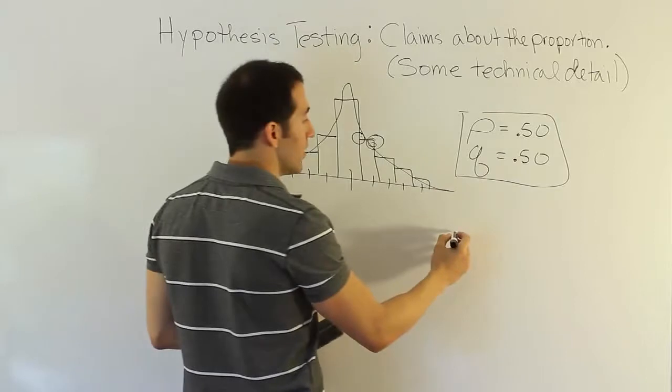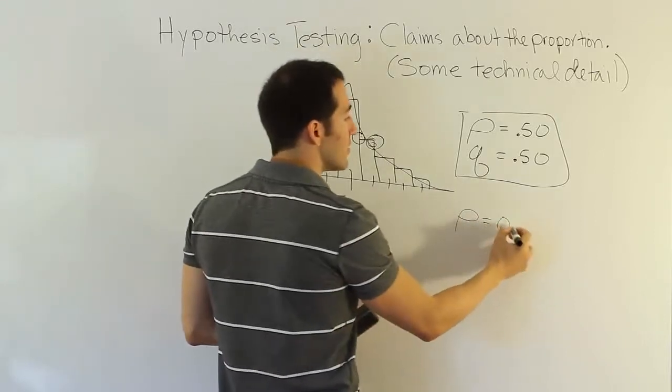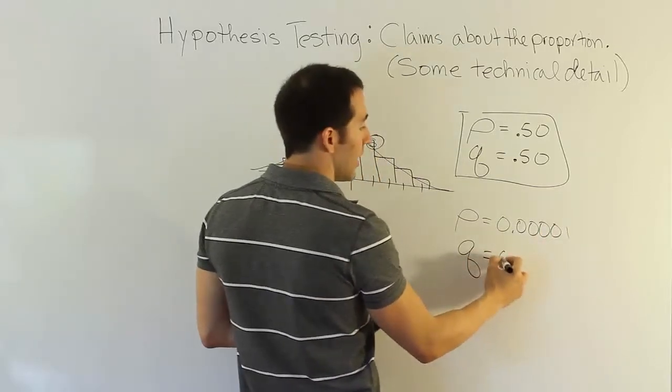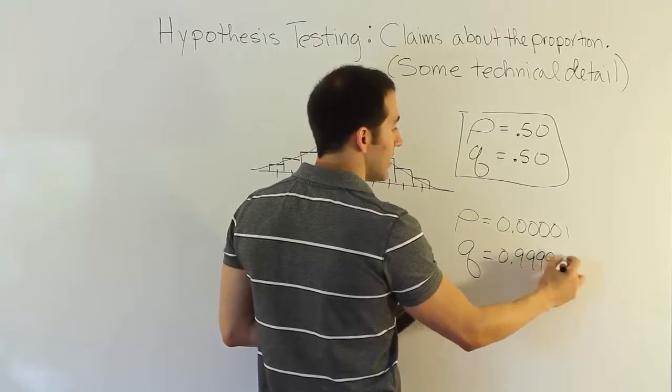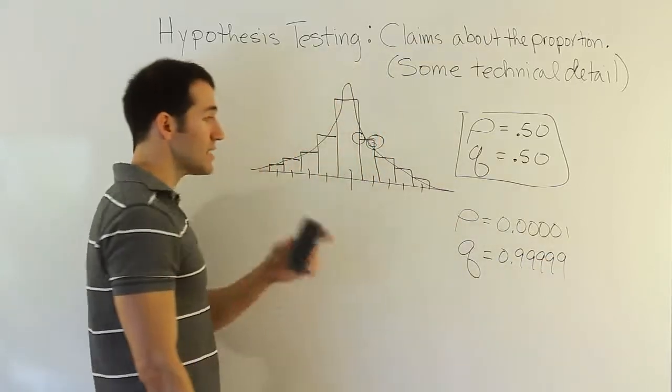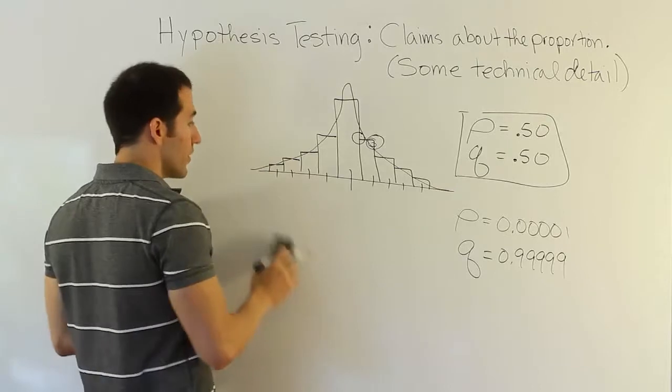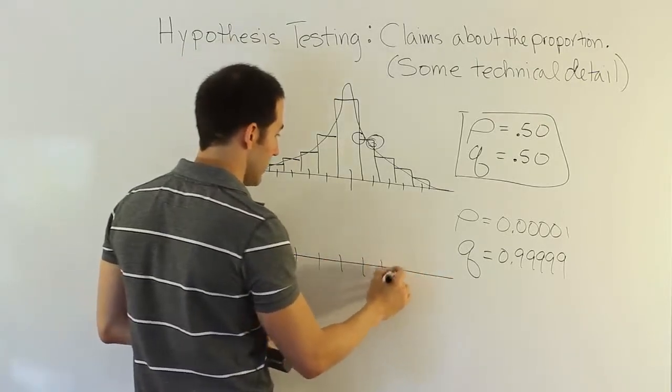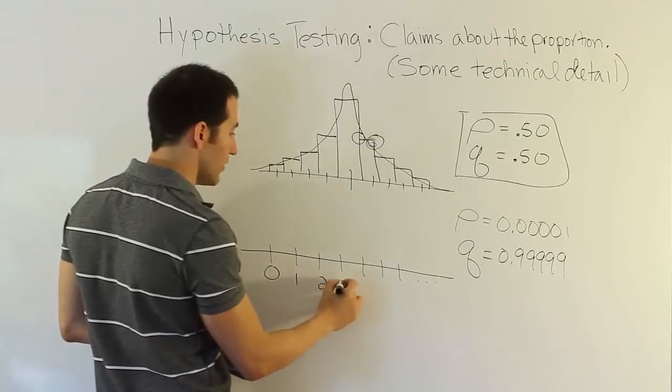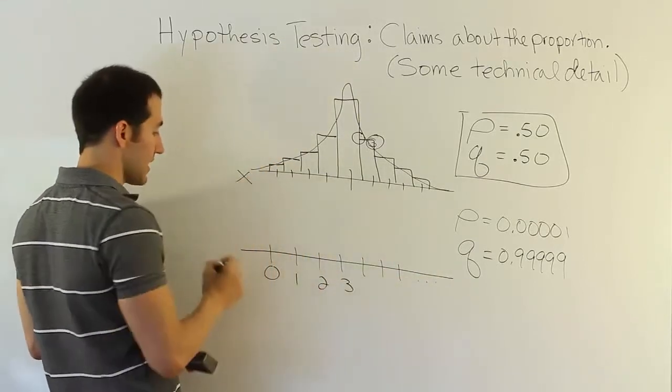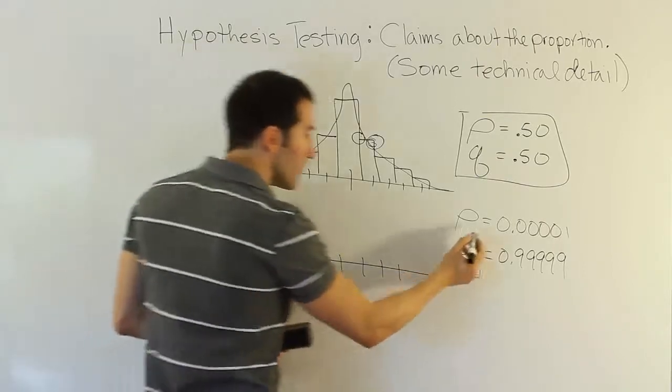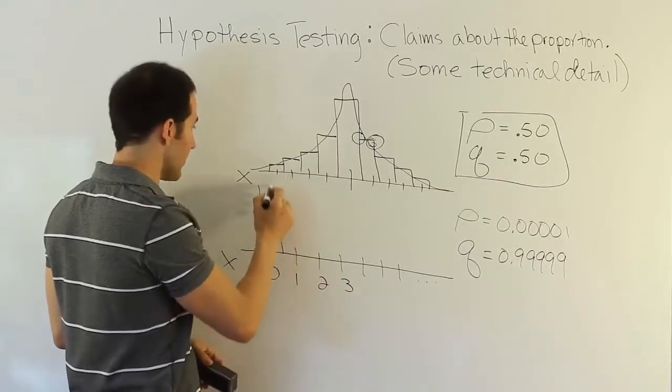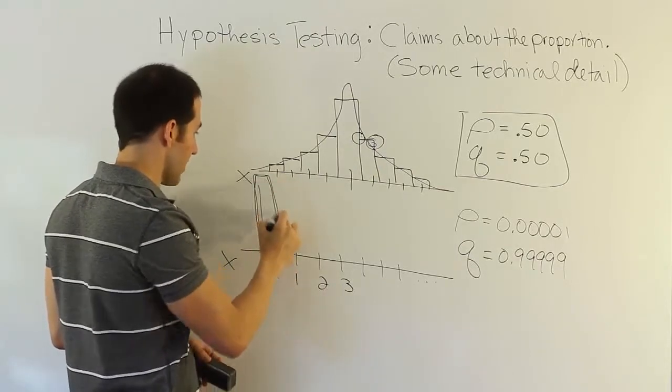Let's take a very extreme scenario where the population proportion is something like 0.00001, and Q then would be 0.99999. In that instance, you would get a very bizarre-looking curve. Your curve would look something like this. If this was 0, 1, 2, 3, probably this is the x-axis, the number of successes involved. If you have a very small probability of success, it means that all the probability is going to be here, around the 0. All the probability would be there, around 0.